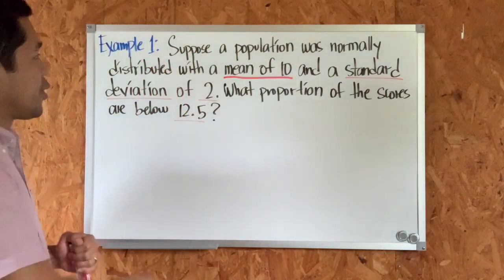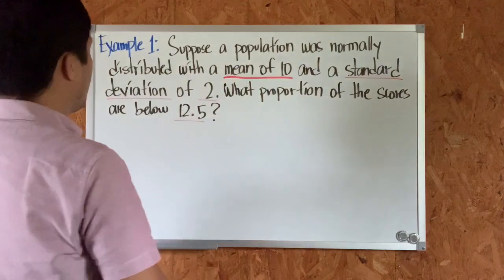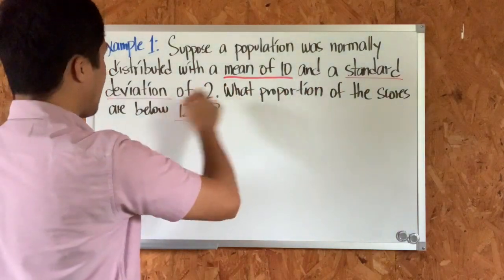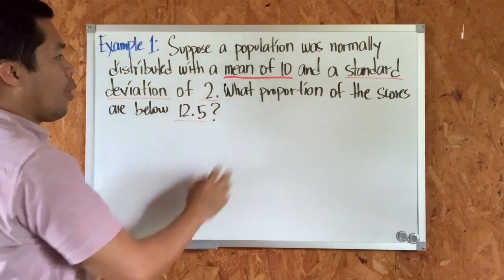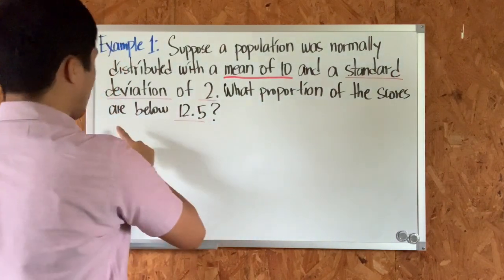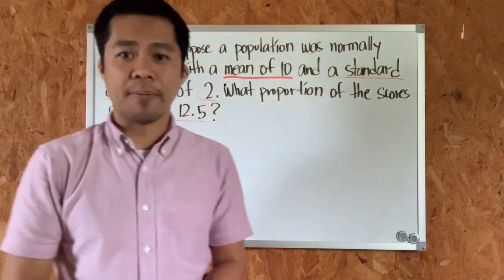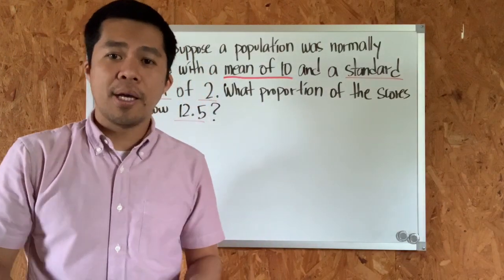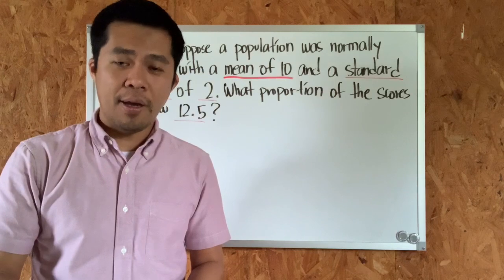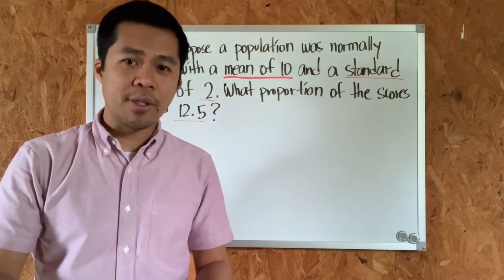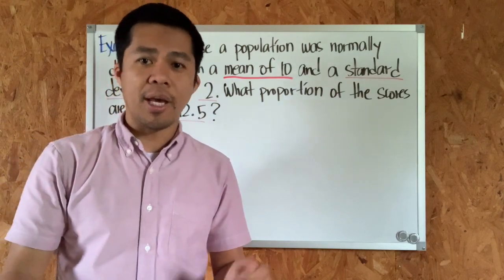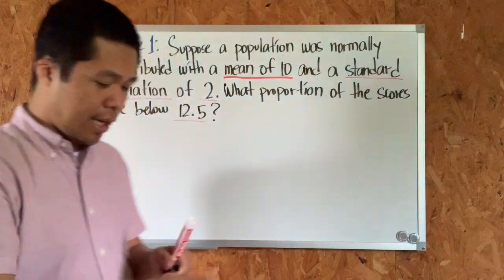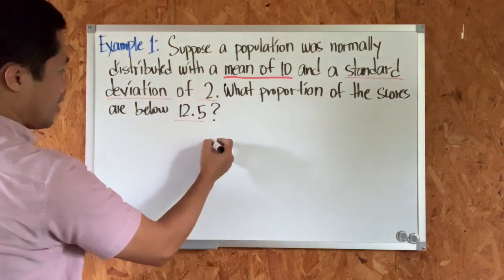This is the first example: suppose a population was normally distributed with a mean of 10 and a standard deviation of 2. What proportion of the scores are below 12.5? When you see this kind of question, we're talking about the z-score. In order to answer this question, the first thing we need to know is the formula of the z-score, and just apply the formula.